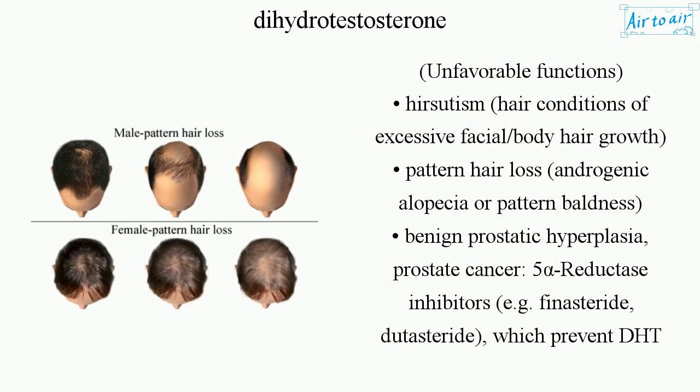Unfavorable functions include hirsutism — hair conditions of excessive facial and body hair growth — pattern hair loss (androgenic alopecia or pattern baldness), benign prostatic hyperplasia, and prostate cancer.